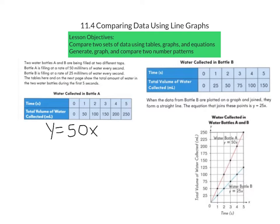We can take the information in the table and plot that to create a straight line graph. The time would be our X value and the total volume of water would be our Y value. Remember, Y is equal to 50X.